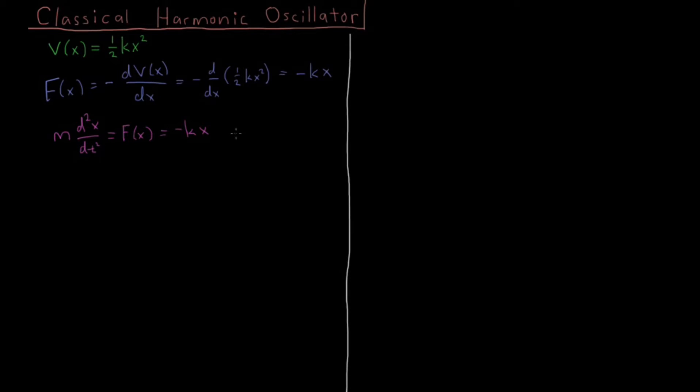So this equation, going to the next step, we have that the second derivative of x with respect to time equals minus k over m times x. So some constant, depending on the stiffness of the bond, divided by some mass times the position.